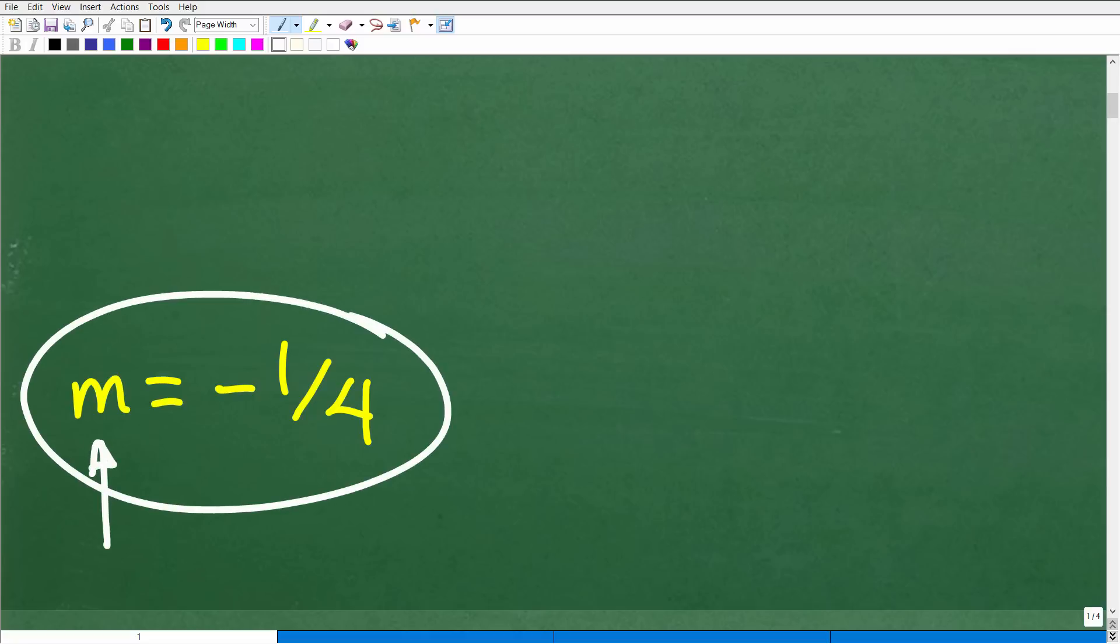Now, some of you might be saying, what's this little m here? Well, in algebra, this small m is a common variable or common symbol used to represent slope. Okay, so this just indicates slope.